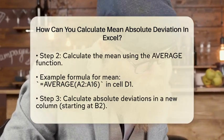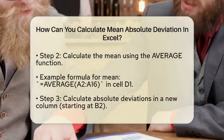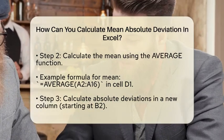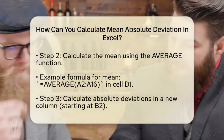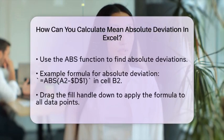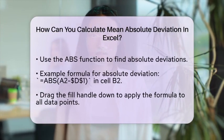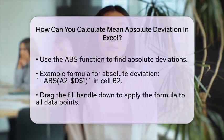Now that you have the mean, it's time to calculate the absolute deviations. In a new column, starting from cell B2, calculate the absolute deviation of each data point from the mean using the ABS function. If your mean is in cell D1, type the formula =ABS(A2-$D$1). This formula will give you the absolute deviation for the first data point.